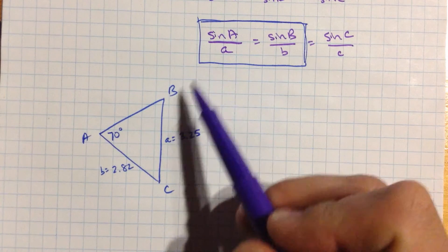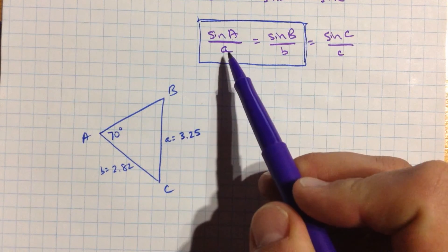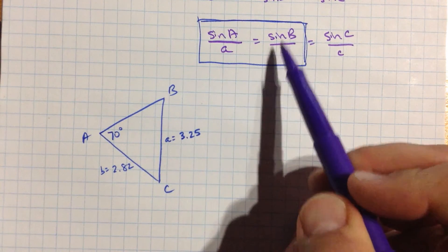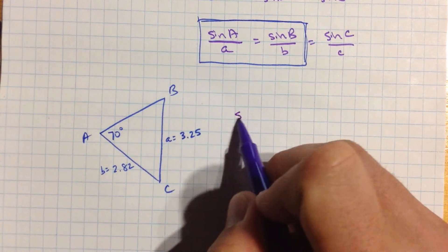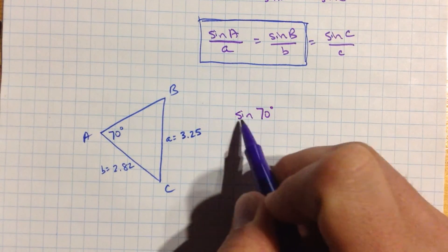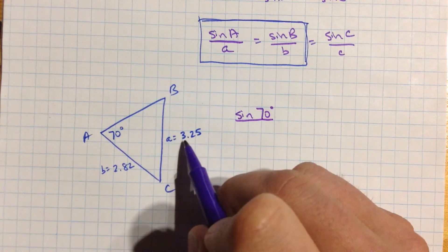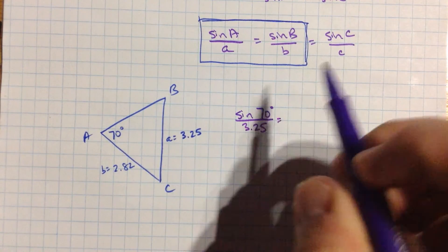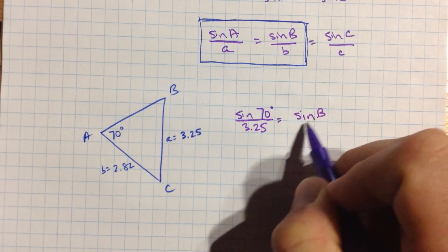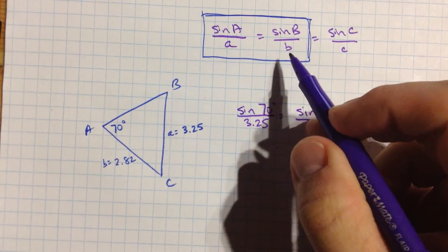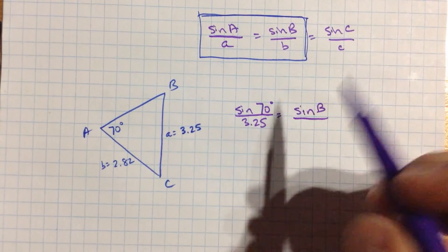So let's see what we can do. We're going to use this exact setup here. We know capital A, we know little a, we know little b, we don't know capital B. So let's see, we have sine of 70 degrees divided by a, 3.25, equals sine of b, well we don't know that, let's just write that down, over little b, which is 2.82.